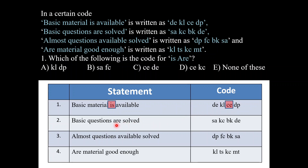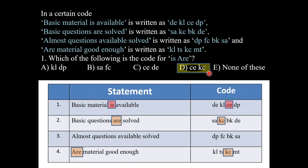Now for 'R': the word R is present in statement number 2 and statement number 4, so its code will be present in those two only. S A is in the second but not the fourth. K C is present in both statement 2 and statement 4, so the code for R is K C. The code for 'is' is C E and for R is K C, giving us answer option D.